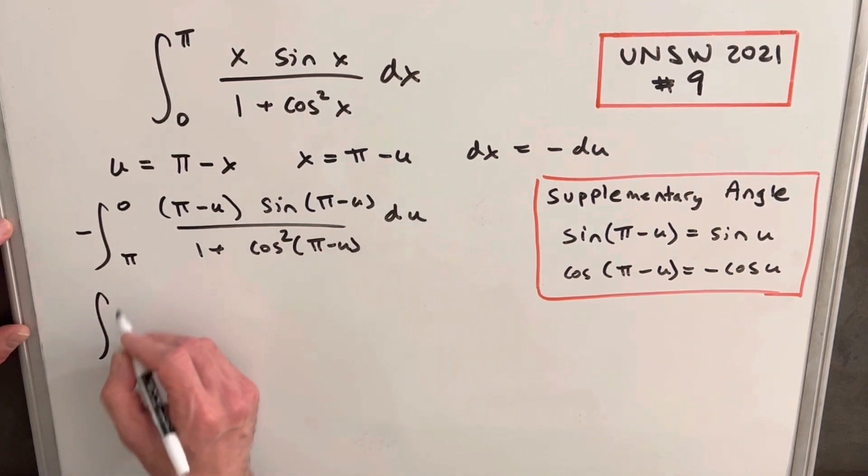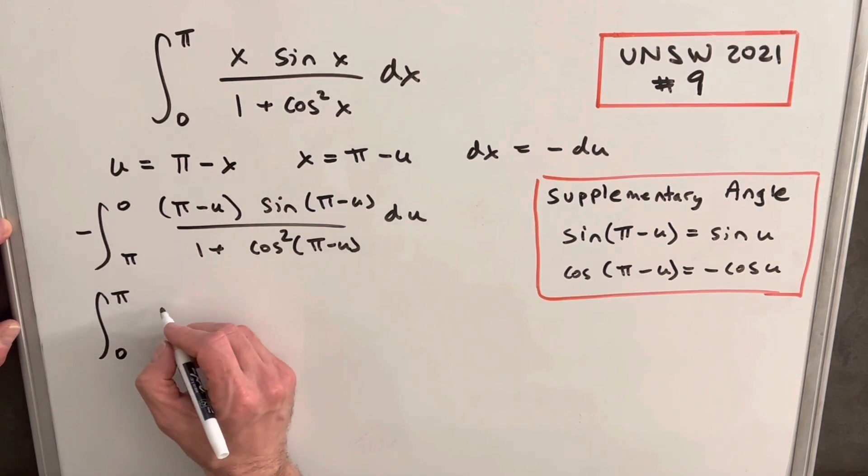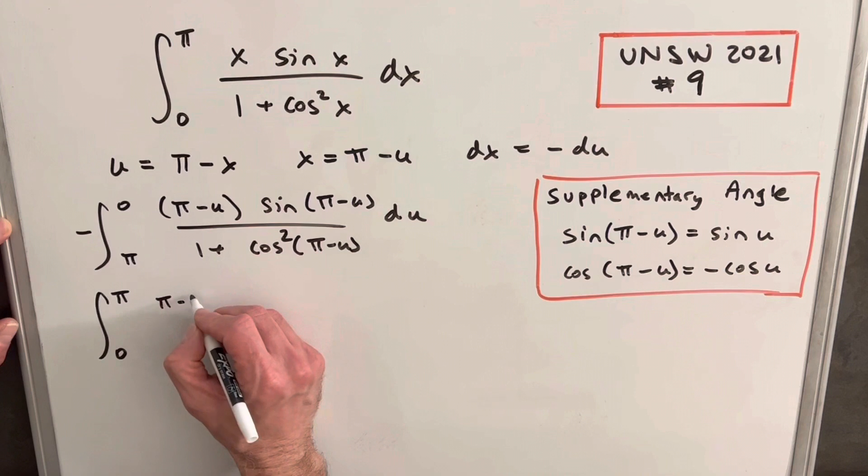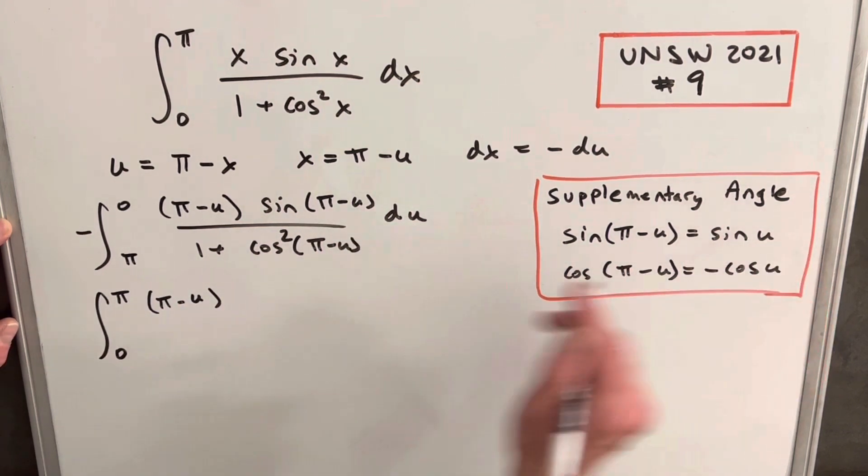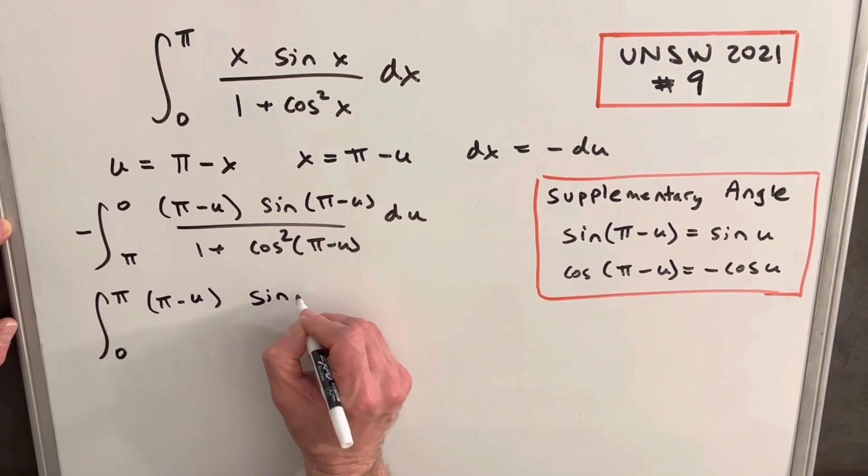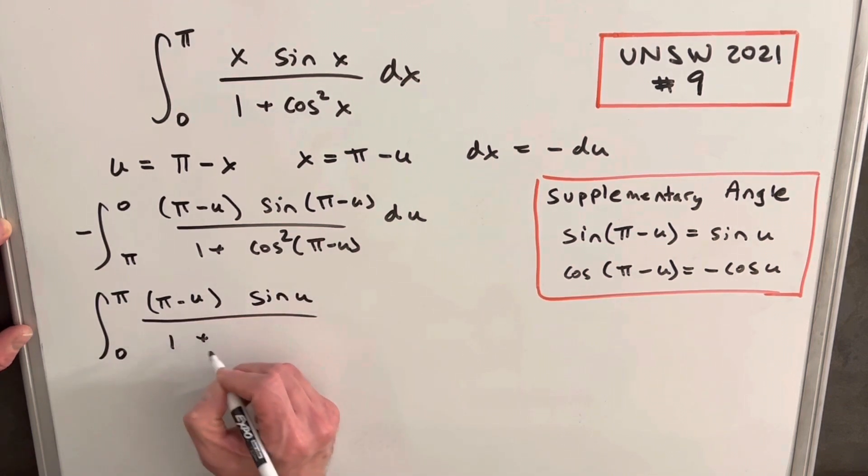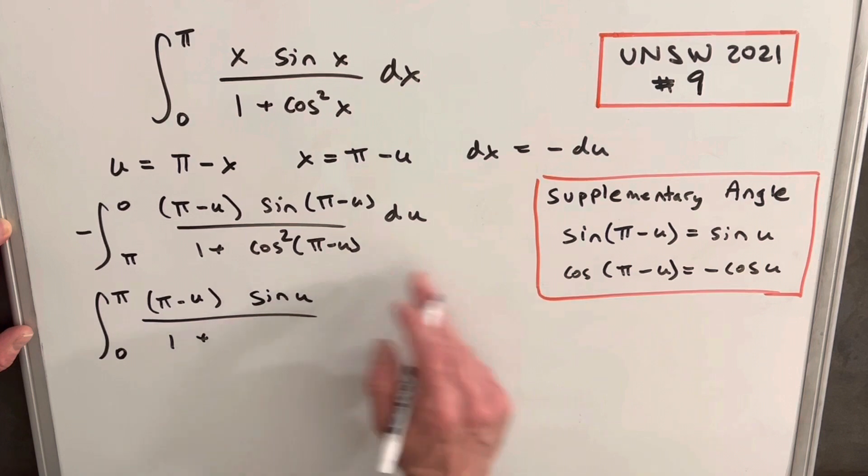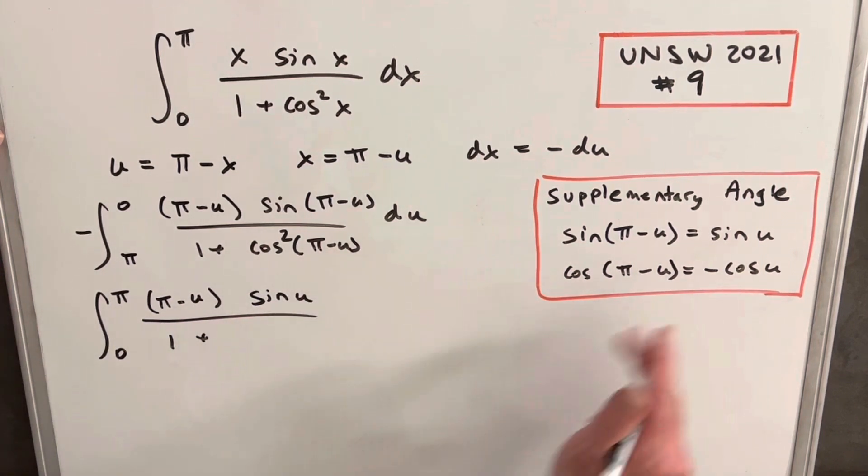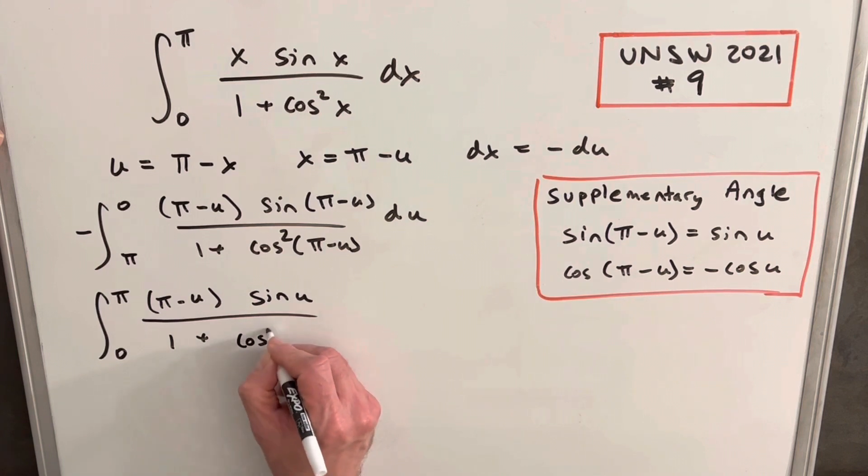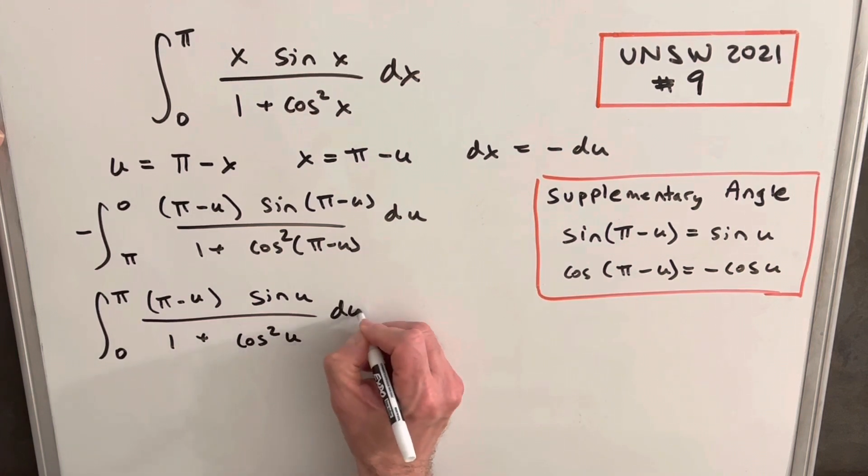So what I'm going to do here is we're going to flip the bounds with the minus. So this is going from 0 to π, and then we'll keep our π minus u, and then sine π minus u is just going to be sine u using that formula over 1 plus, and then our cosine π minus u is going to be minus cosine u. But because we're squaring it, that minus sign is going to go away, and we're just going to have cosine squared u du.